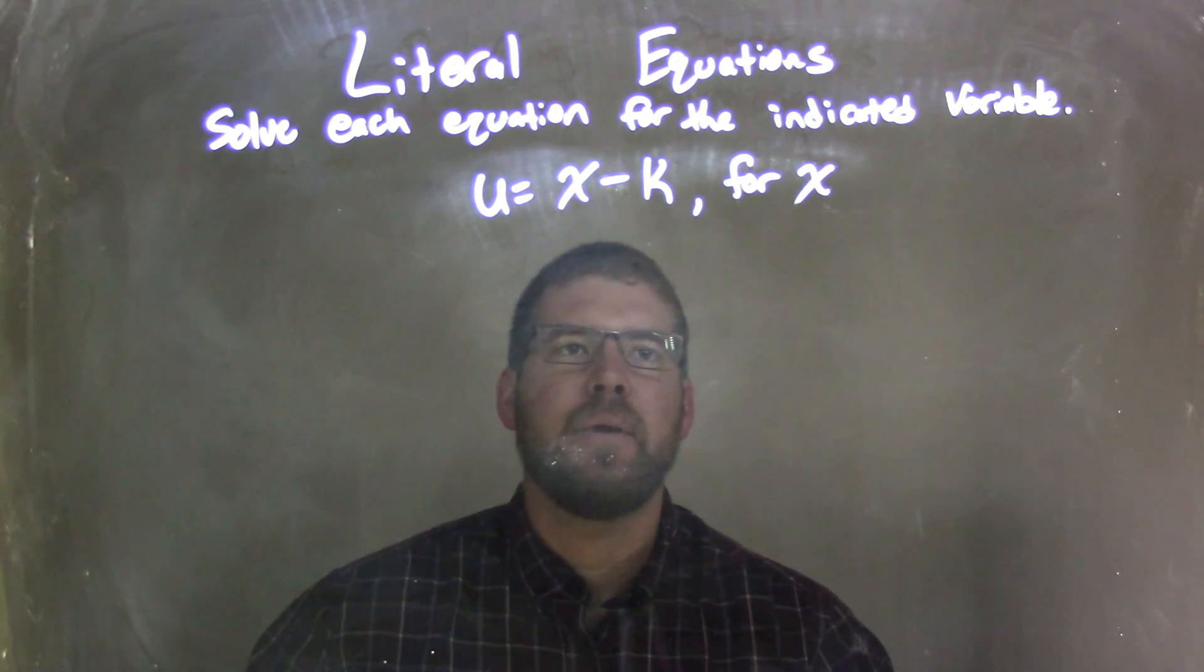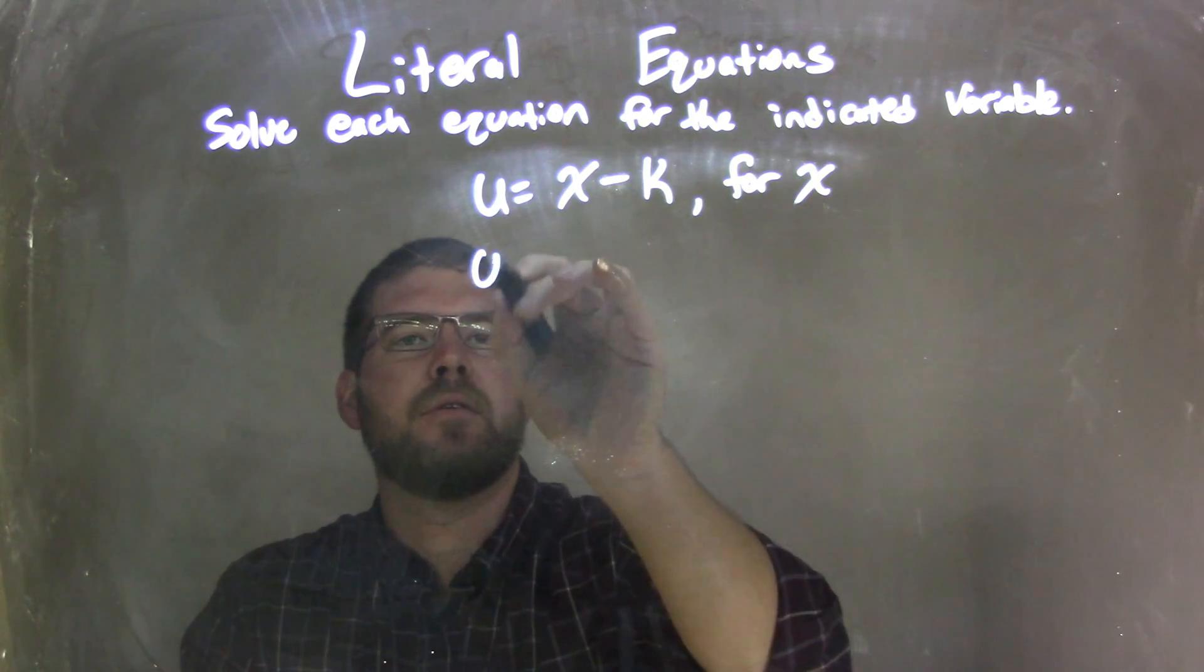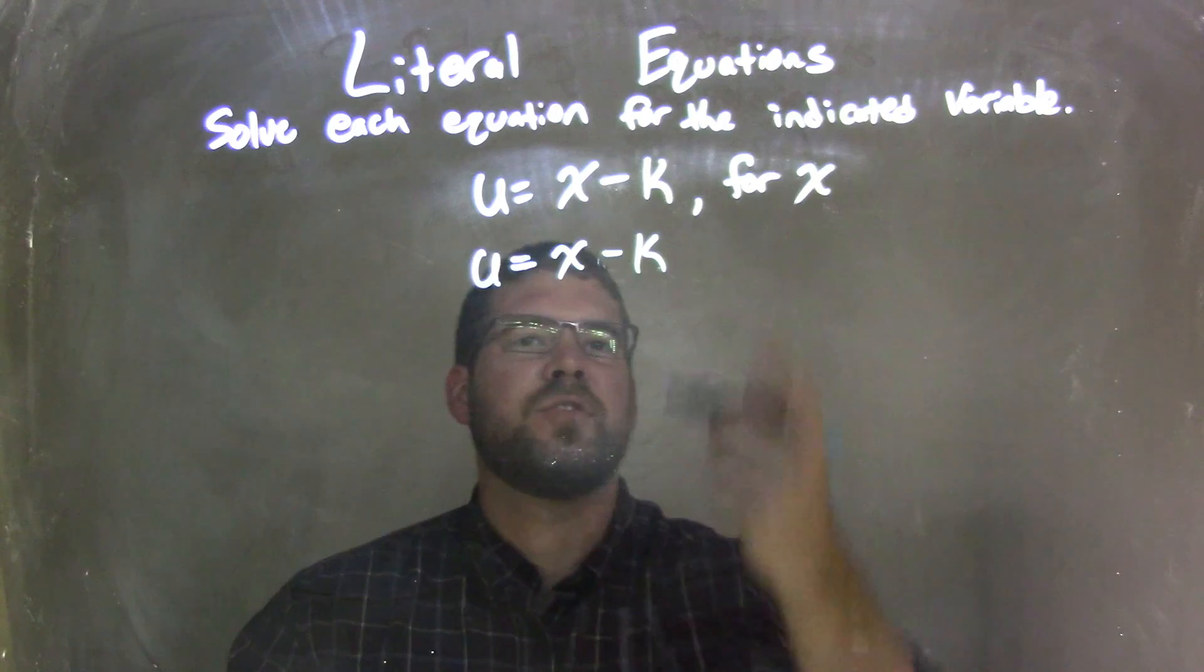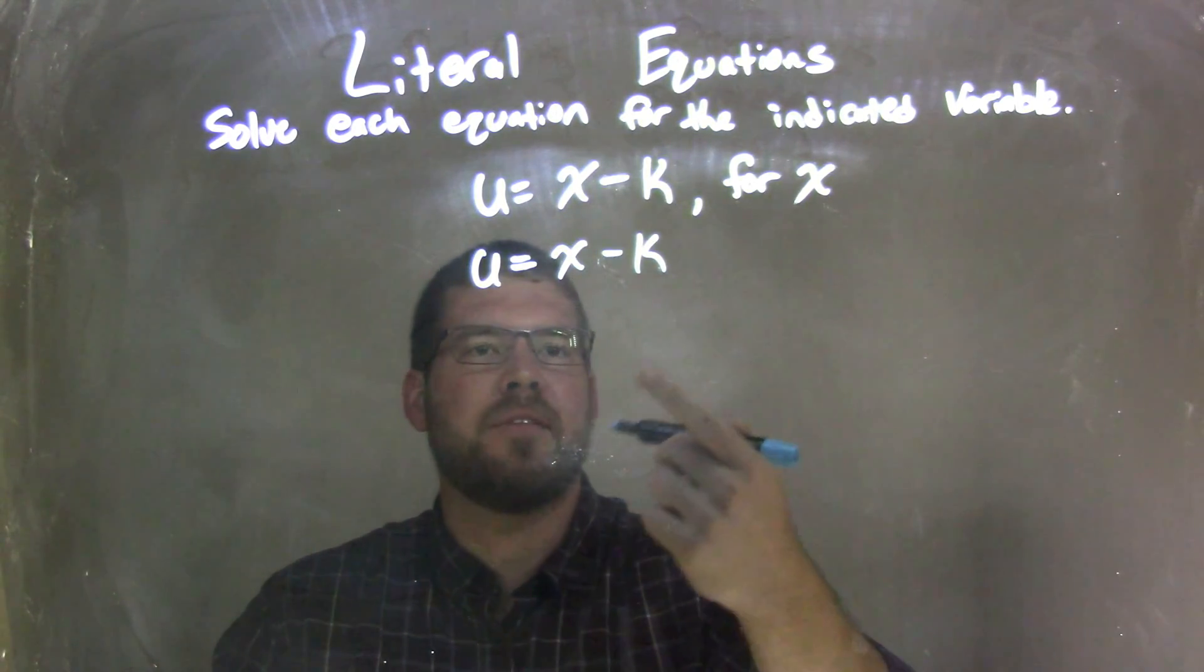Well, my first step here, I'm going to rewrite this equation so it's by itself, x minus k. Then from there I need to solve for x, so how can I isolate x by itself?